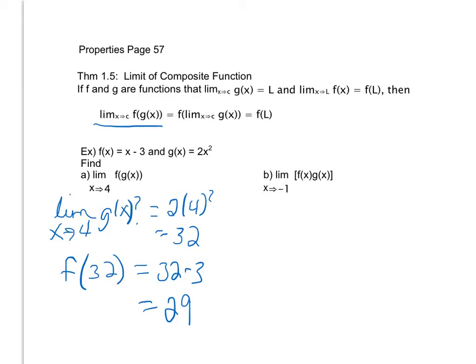Notice when I look at example b, this is not a composite function. This is f(x) times g(x). Notice that if it were a composite function it would be f(g(x)). So what I want to do here is look at my properties on page 57. My properties tell me that I can find the limit as x approaches -1 of f(x) and find the limit as x approaches -1 of g(x) and just multiply those limits together.